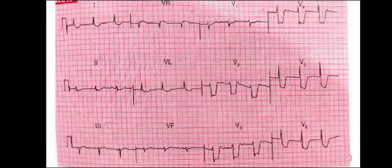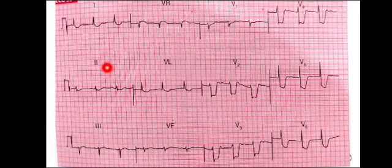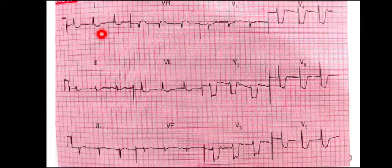Bismillahirrahmanirrahim. Assalamu alaikum. In this ECG we can see a P wave in lead 2, so this is a sinus rhythm. Calculating the rate, the number of big boxes between the two R waves are 4, so the heart rate is between 60 to 70 beats per minute.